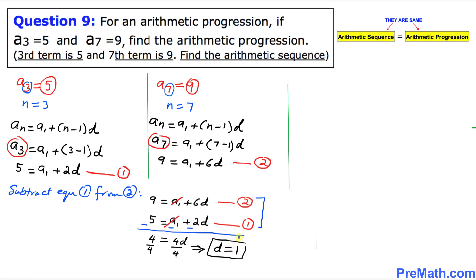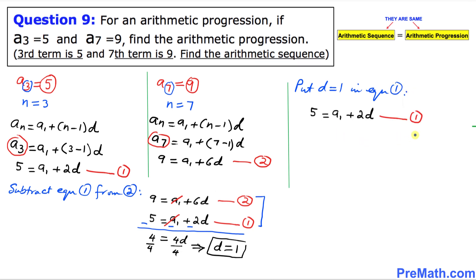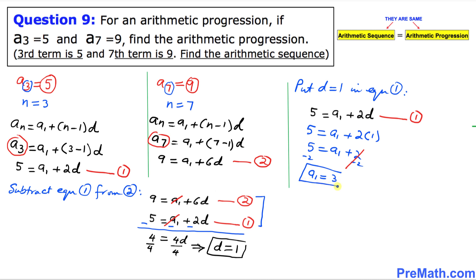Now that d equals 1, we substitute this value into Equation 1 to find a sub 1. Equation 1 is 5 equals a sub 1 plus 2 times 1, which gives 5 equals a sub 1 plus 2. Subtracting 2 from both sides, the 2 and negative 2 cancel out, giving us a sub 1 equals 3. The very first term is 3.